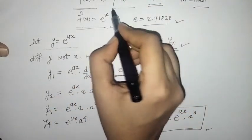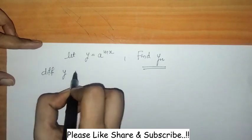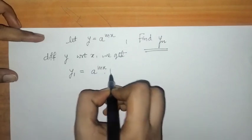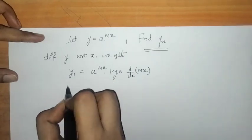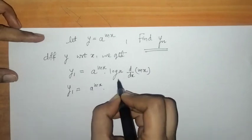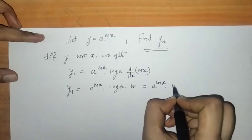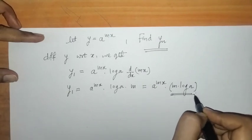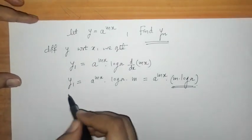Next, we have to find the nth derivative of a raised to mx. Let y equal a raised to mx. Differentiating y with respect to x, we get the first derivative y1, which is a raised to mx into log of a into m. So y1 equals a raised to mx into m times log of a. Here m times log of a is a constant, and a raised to mx is the function we differentiate repeatedly.